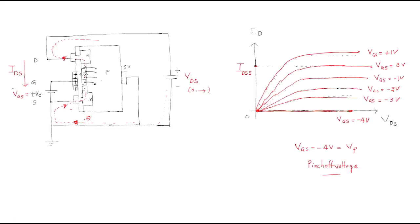So to summarize all cases: when VGS is negative (at pinch-off voltage), the drain current is zero. As VGS increases from negative toward zero, the current increases. At VGS = 0 we have a certain current. When VGS becomes positive, the current continues to increase. Free electrons flow from source to drain, and conventional current flows from drain to source.